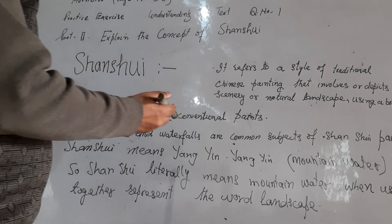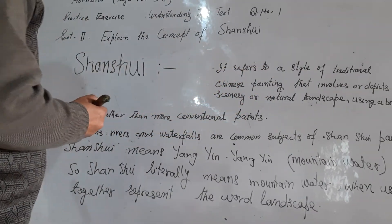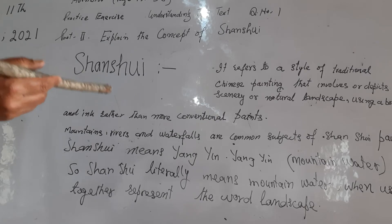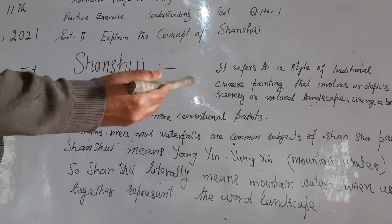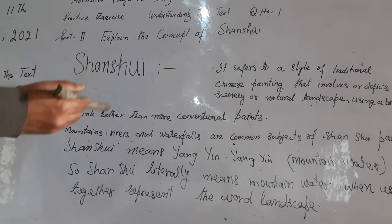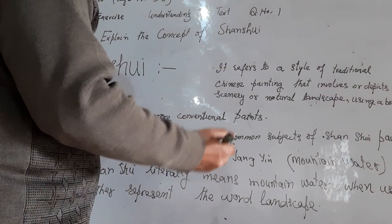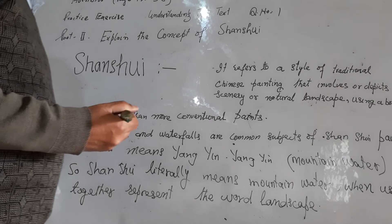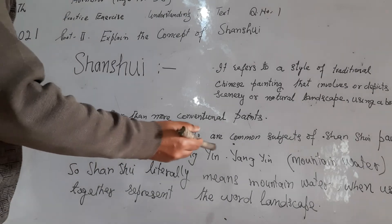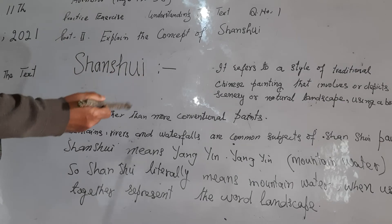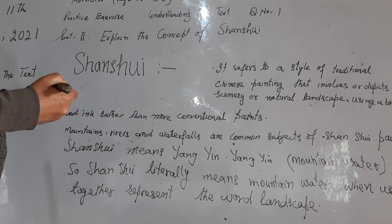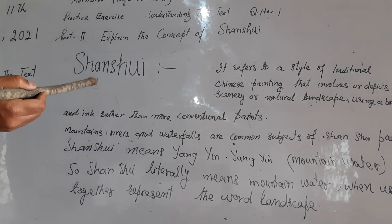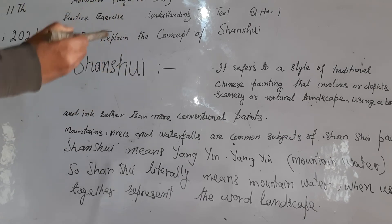Mountains, rivers, and waterfalls are common subjects of Shanshu paintings. Shanshu means 'Shan Shui' — mountain and water — reflecting a Daoist view of the universe. When written separately, 'Shan' means mountain and 'Shui' means water. So together, they represent the word landscape. This is all about the concept of Shanshu — a style of traditional Chinese painting that depicts natural landscape.